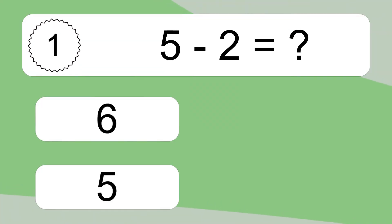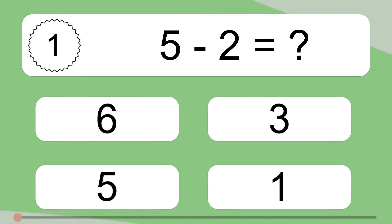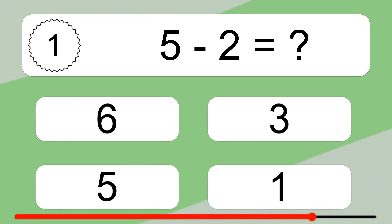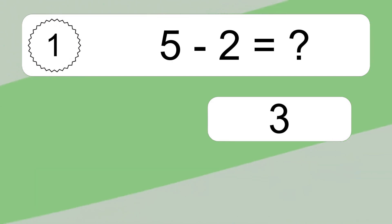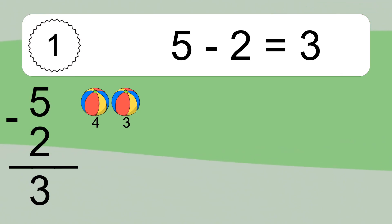5 minus 2 equals what? 5 minus 2 equals 3. Let's count it: 4, 3.